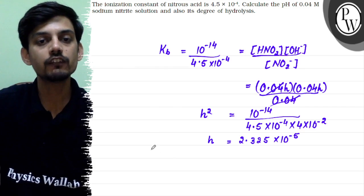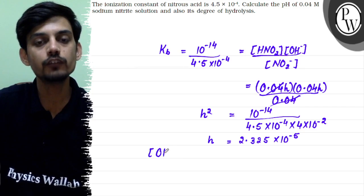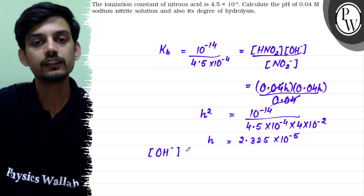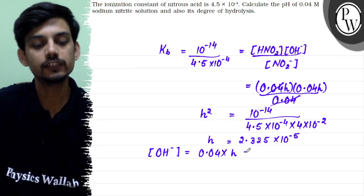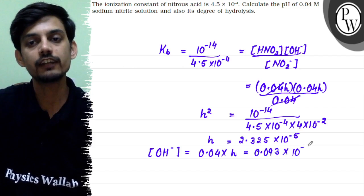So if we can use the concentration of OH-, this will be 0.04 × H. So this will come out as 0.093 × 10^-5 moles per liter.